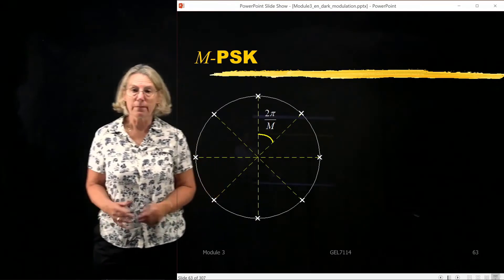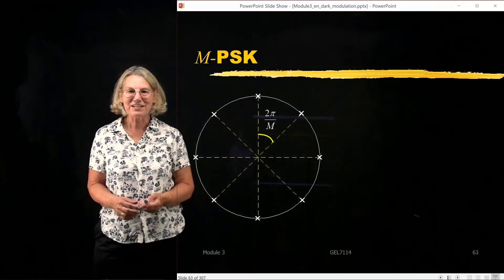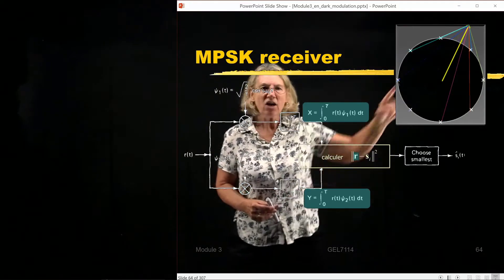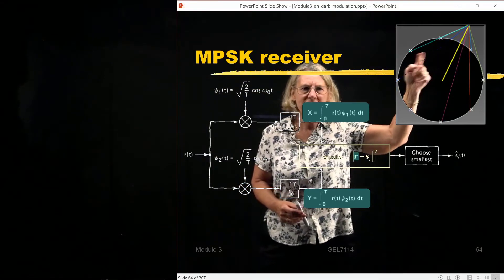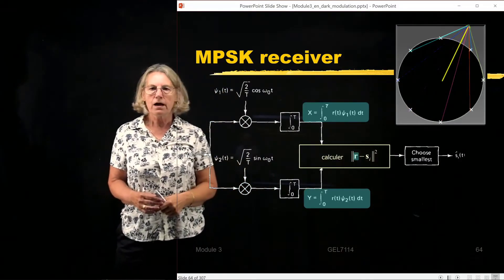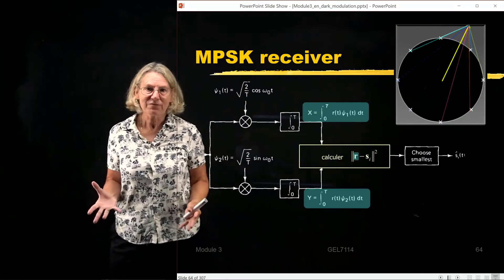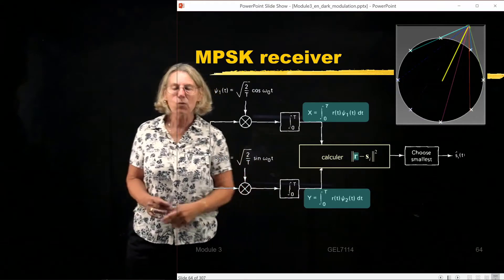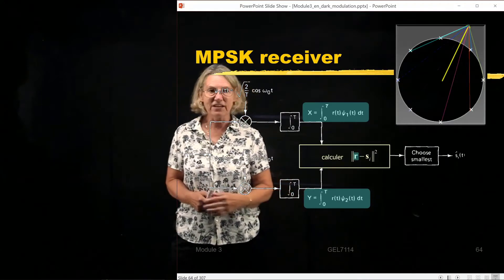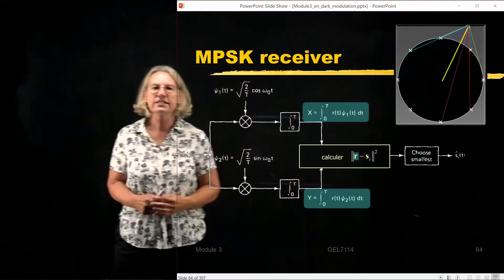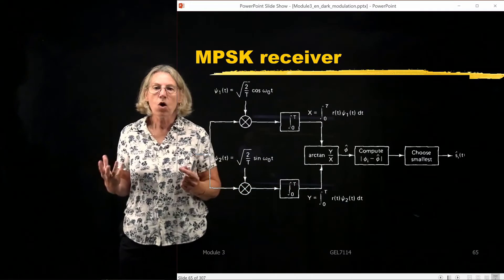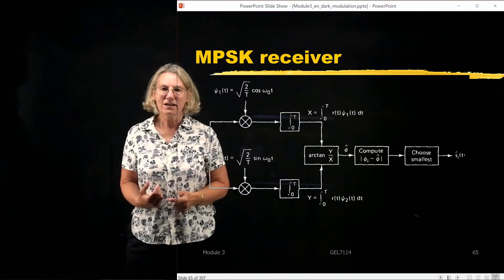Let's take an example from one of our modulation formats — 8-PSK. One receiver structure would calculate the distance between a received vector and all eight symbol points, giving eight distance calculations. However, after doing just two correlations, I have the coordinates of the received vector. Instead of eight distance calculations, I take those coordinates and calculate the arc tangent — that is, the phase of the received vector.